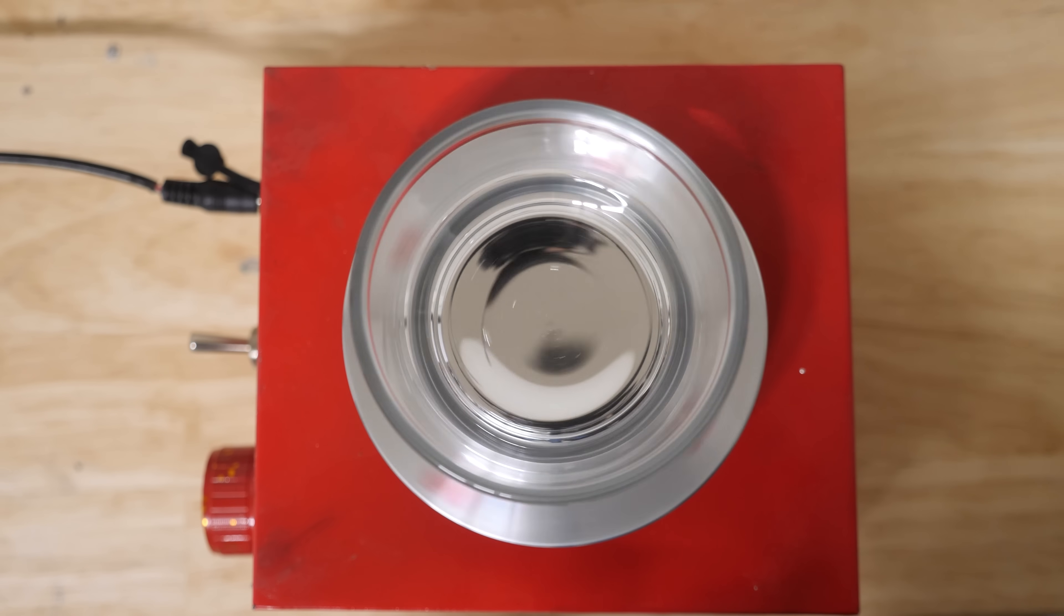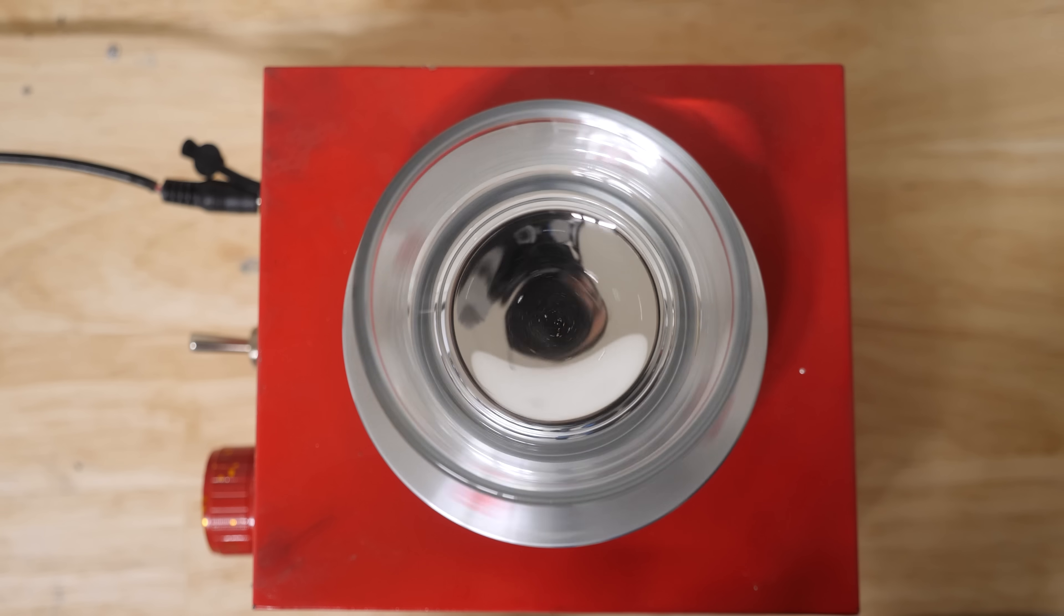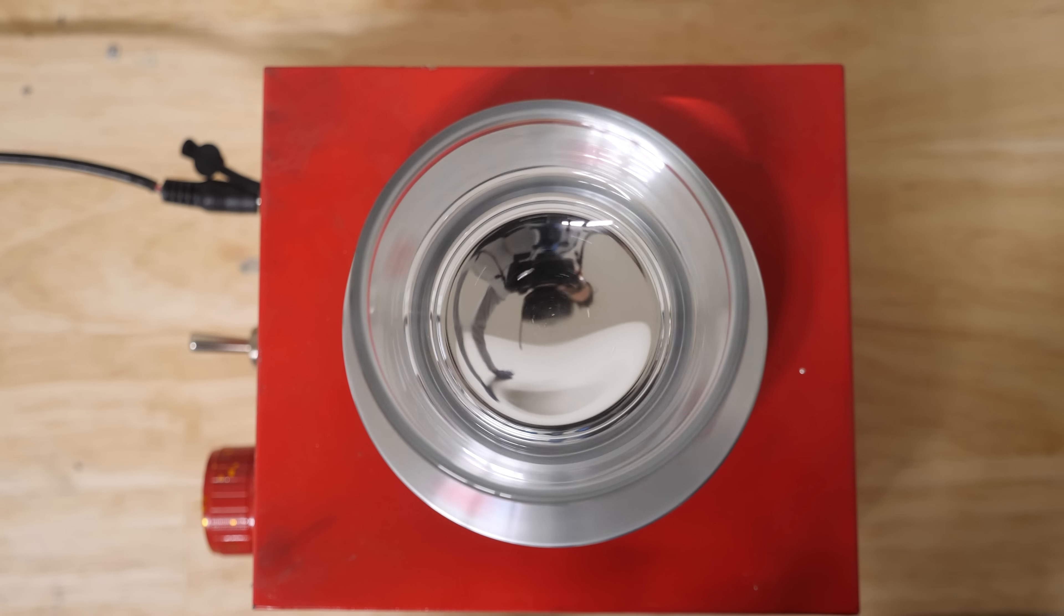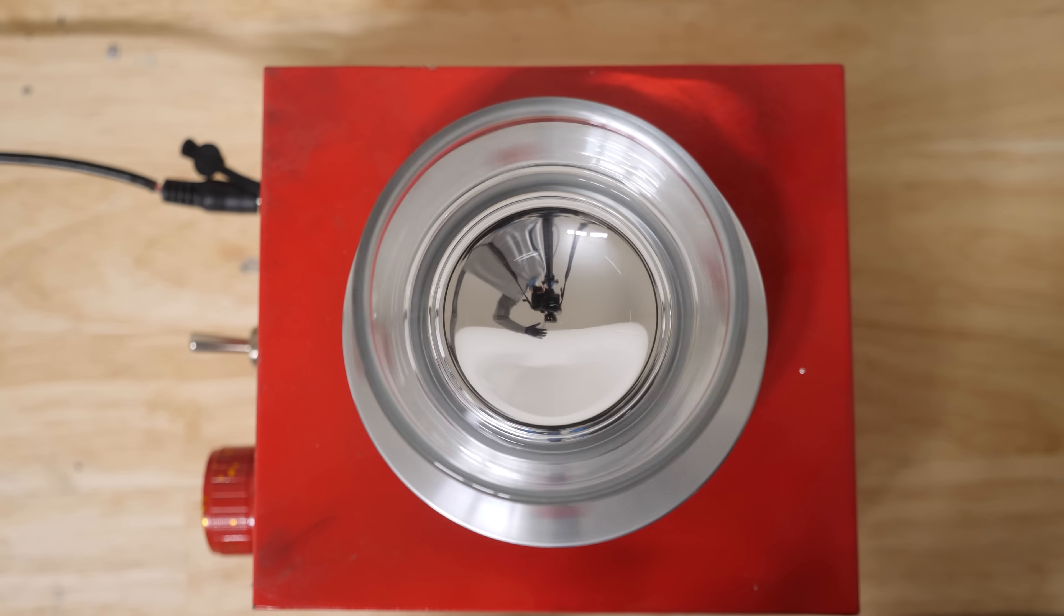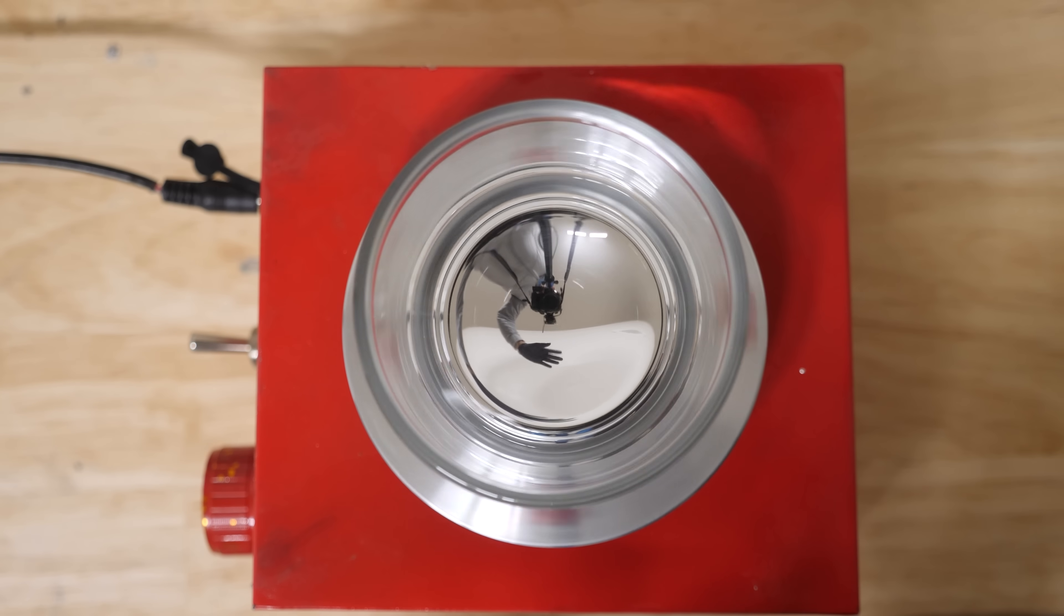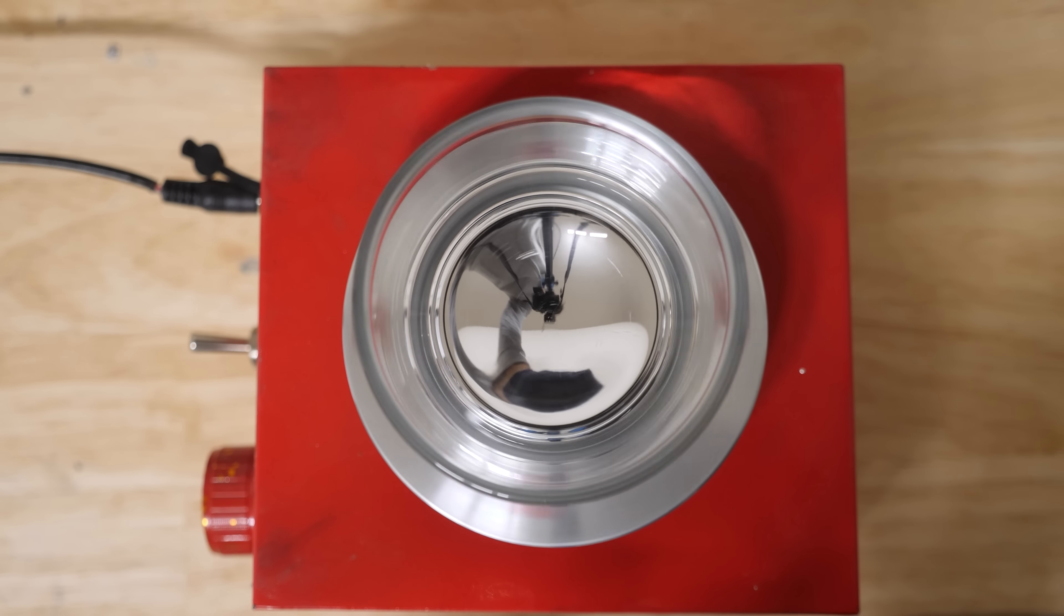So the faster I spin it the further the focal point. So you can see my image gets smaller and smaller here as I increase the speed. Look how cool this looks. I can actually change the focal point of the mirror just by changing the rotational speed.